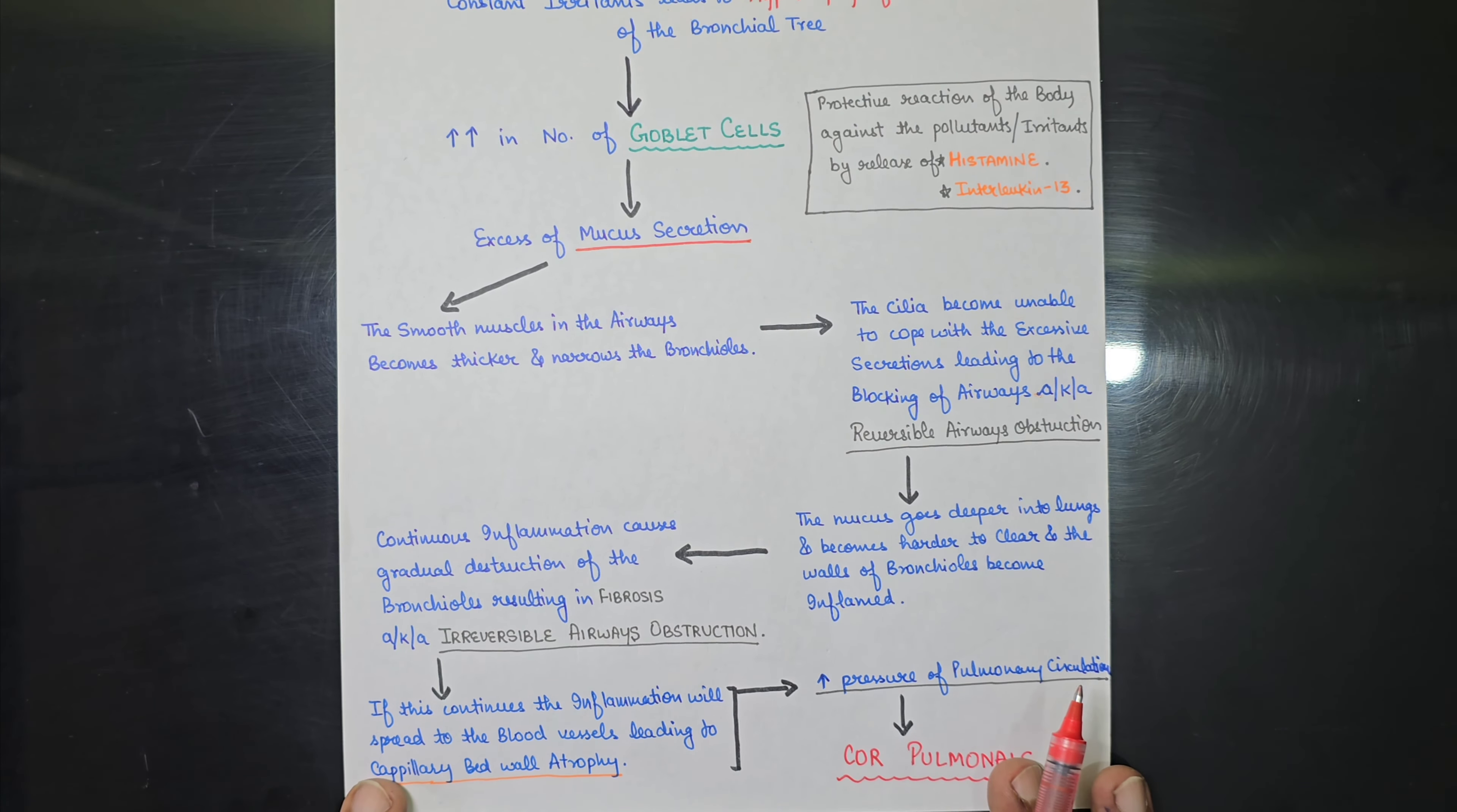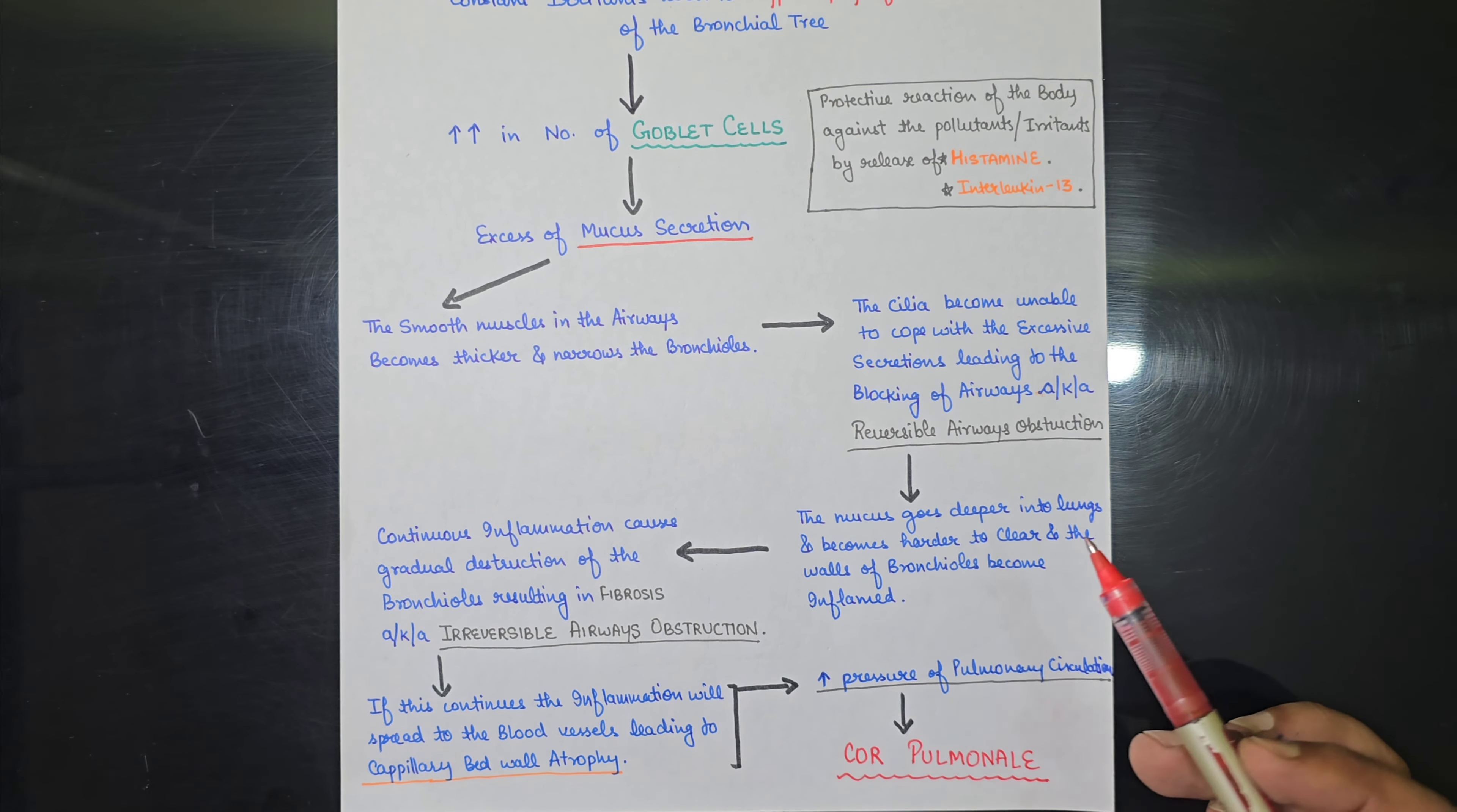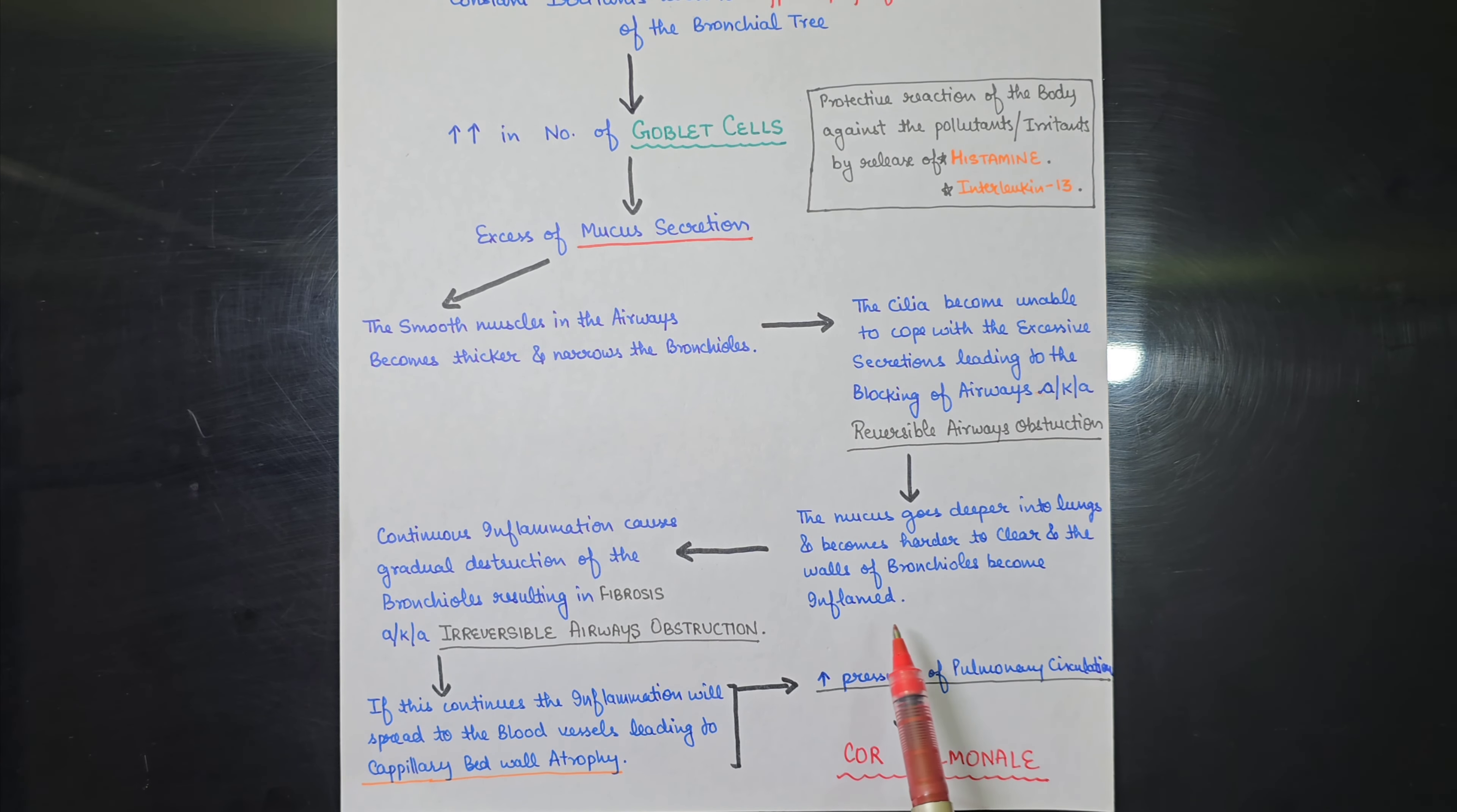But as the mucus goes deeper into lungs, as the mucus goes deeper into lungs and it becomes harder to clear and the walls of the bronchioles became inflamed. So after a certain period of time, if the patient does not get any kind of treatment, the mucus will lodge deeper in the lungs and it becomes harder to clear the walls of bronchioles and they will become inflamed.